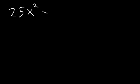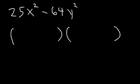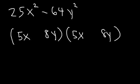Try this one: 25x squared minus 64y squared. The square root of 25x² is 5x, and the square root of 64y² is simply 8y. So the answer is (5x minus 8y)(5x plus 8y). As you can see, using the difference of squares technique is not too difficult.